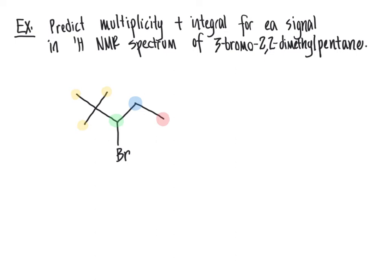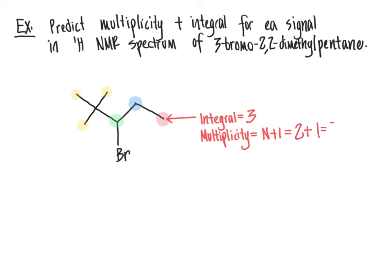The next task is to predict the multiplicity and integral for each signal. For the integral, we count the number of protons contained within that signal. The terminal methyl group has three hydrogens, so the integral is three. For the multiplicity, we use the N+1 rule — counting the number of vicinal hydrogens. The adjacent carbon is the CH2 group, contributing two vicinal hydrogens, so N+1 = 2+1 = 3, which we describe as a triplet.